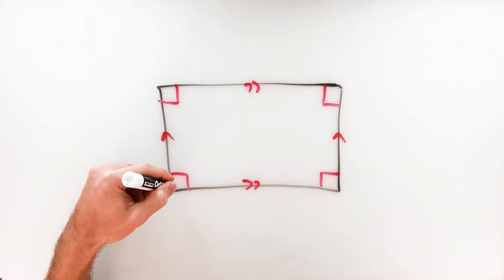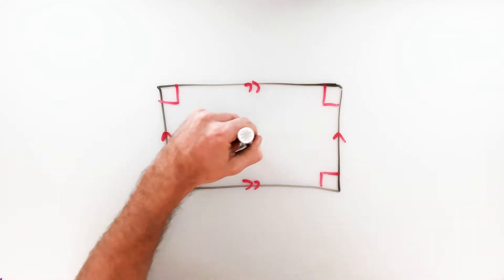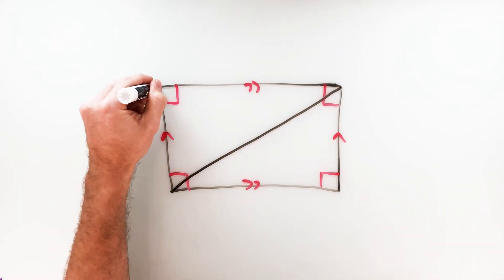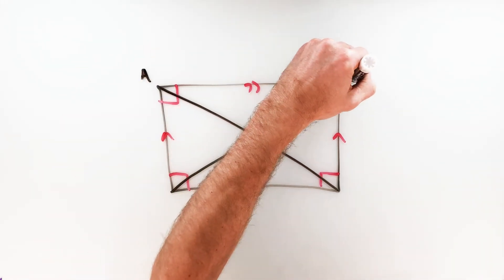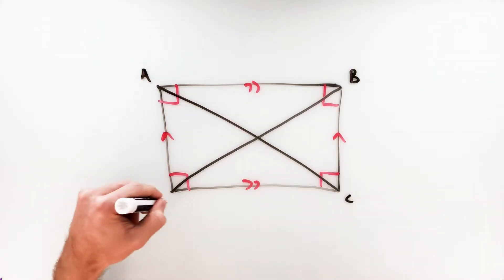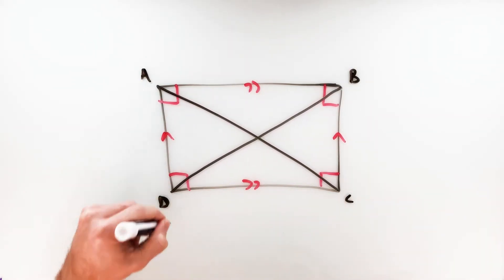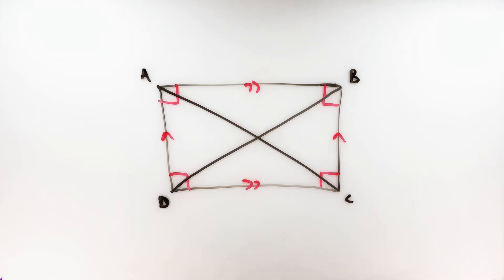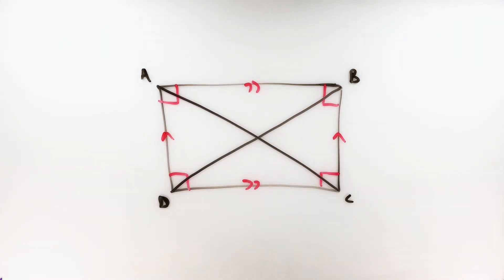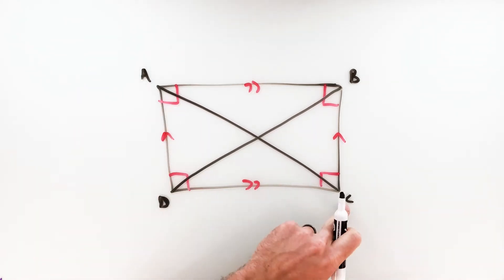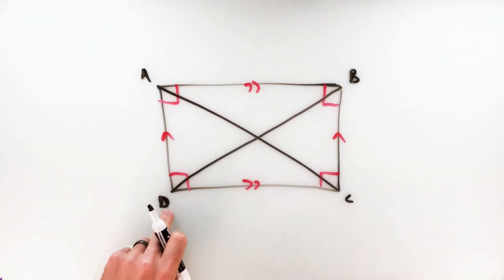We're going to start again with the diagonals. The property we're going to talk about with a rectangle is that the diagonals of a rectangle are congruent. So for a rectangle with vertices A, B, C, D, diagonal AC has to be congruent to diagonal DB.